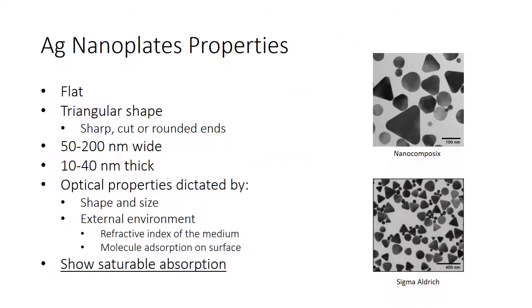Silver nanoplates are flat, triangular in shape, with sharp cut or rounded ends. They are 50 to 200 nanometers wide and 10 to 40 nanometers thick.